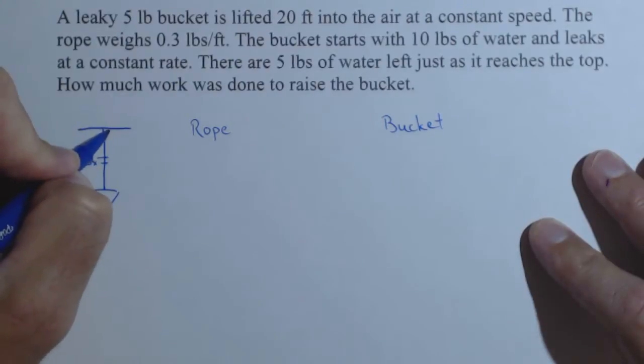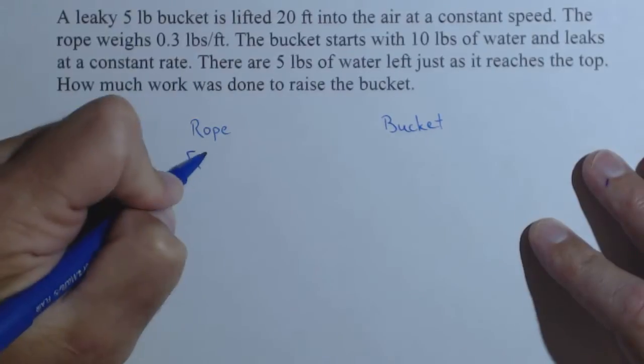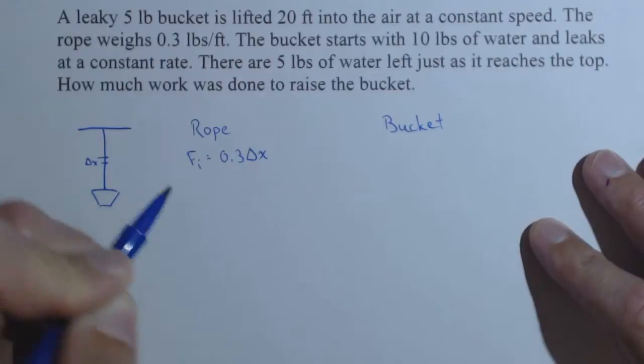That's the size of the rope, and so the force on the ith slice is 0.3 delta x.